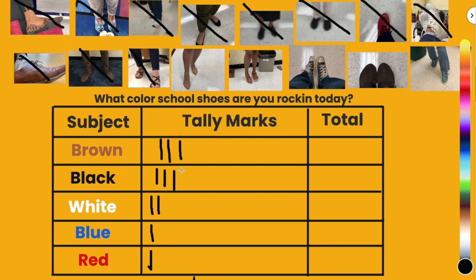Black shoes. Brown shoes. Look, another pair of brown shoes — and remember, now that I'm getting to five, I need to make sure I draw a diagonal. Okay. Blue shoes. Brown shoes. Wow, look at brown — it's in the lead! And then blue shoes.